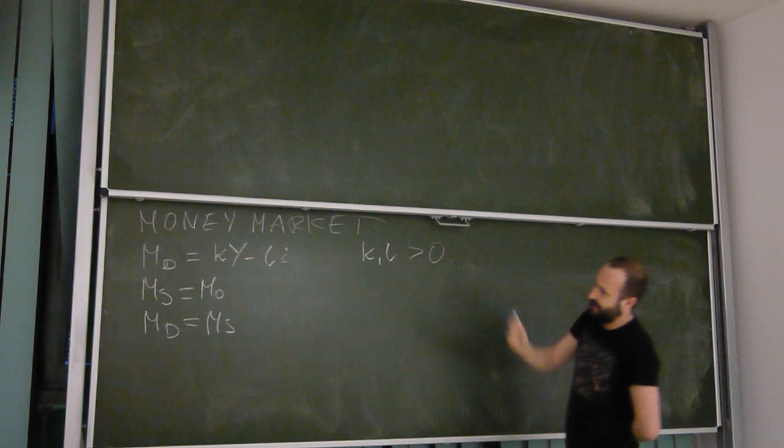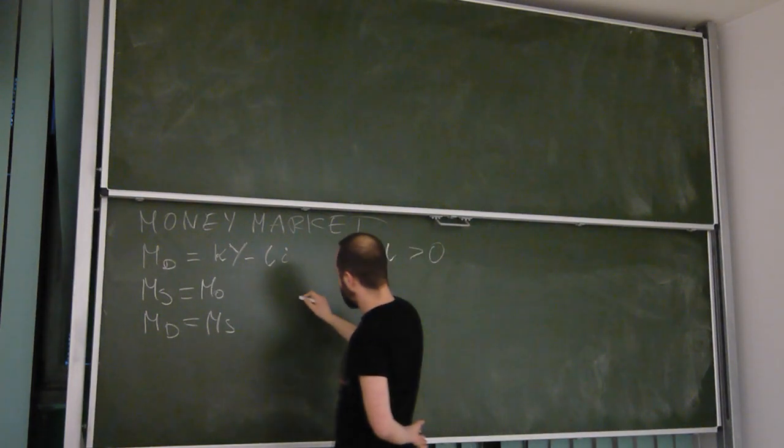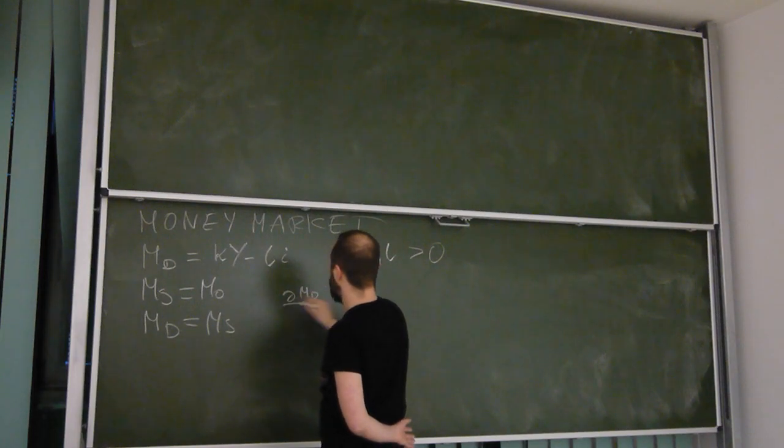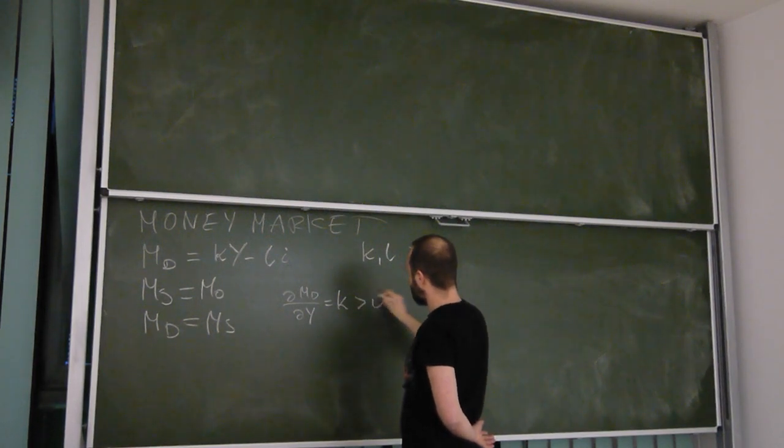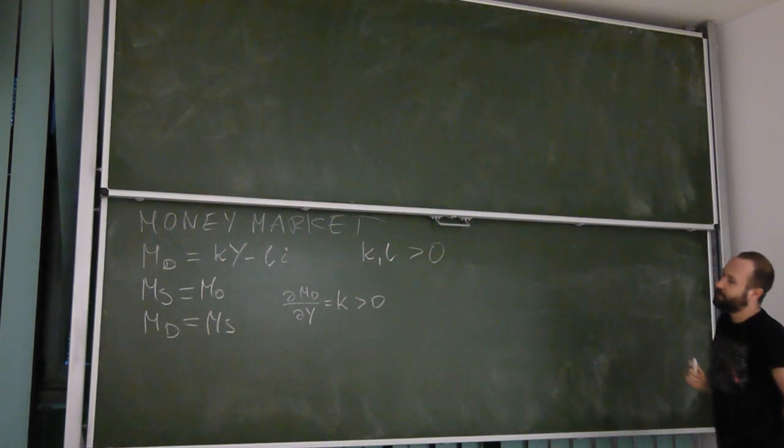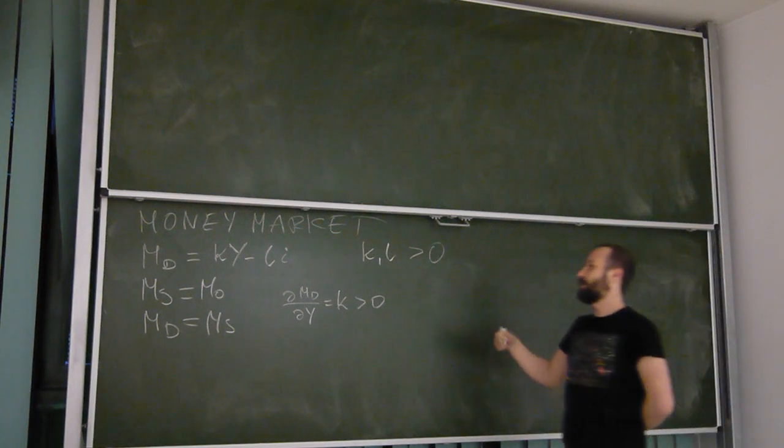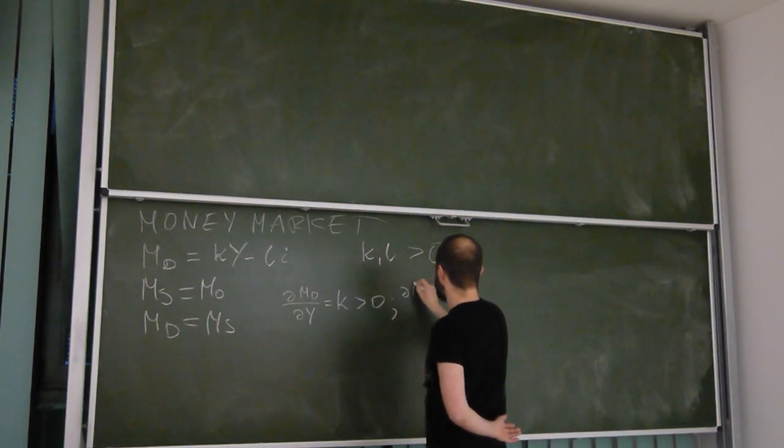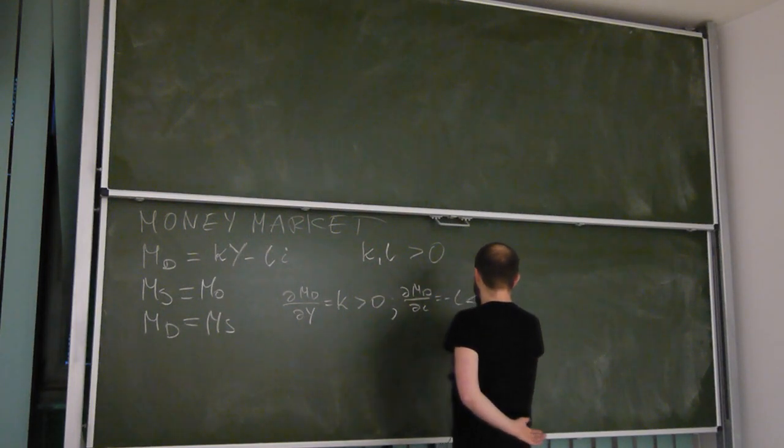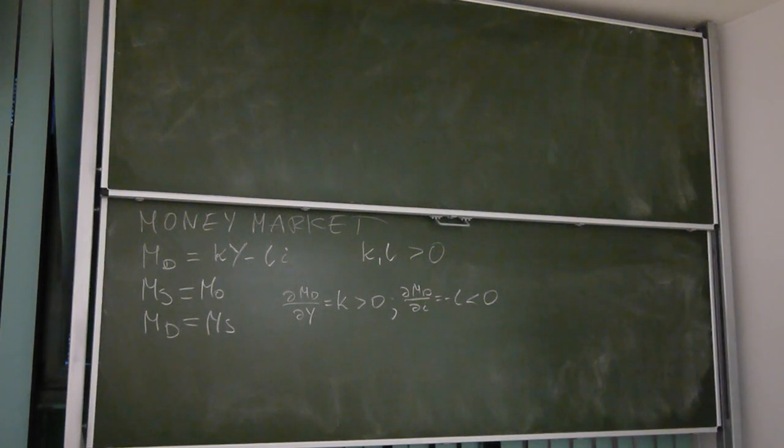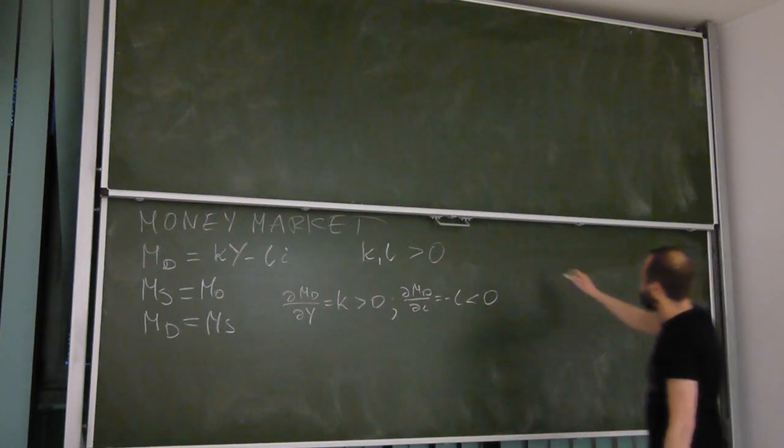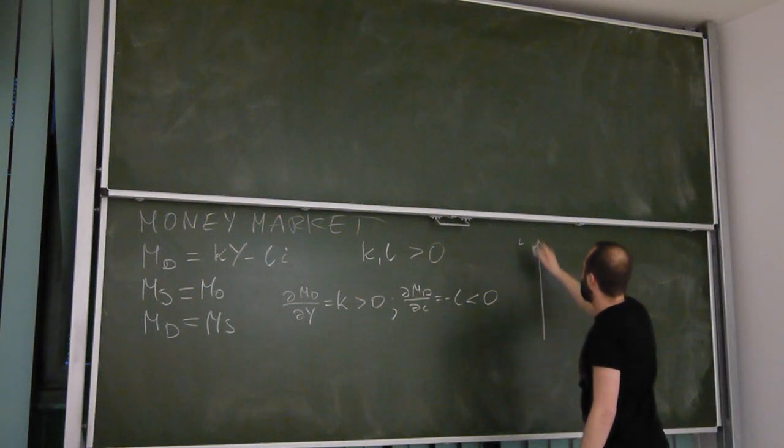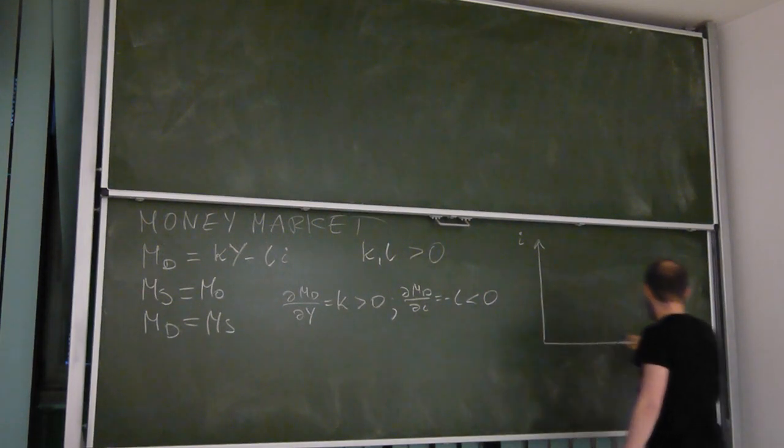Now look, from this we clearly see how income and interest rate will affect money demand. We see that the partial derivative of money demand with respect to income is equal to K, which is positive. So the higher the income, the higher the money demand. And of course the partial derivative of money demand with respect to interest rate is negative L, which is a negative number.